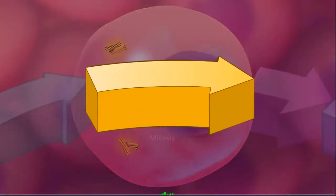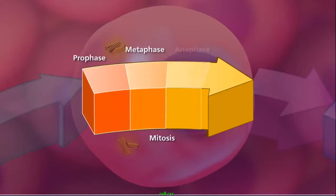The cell is now ready to go through mitosis, which consists of prophase, metaphase, anaphase, and telophase.